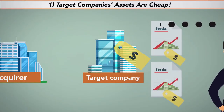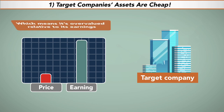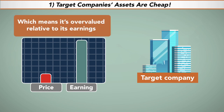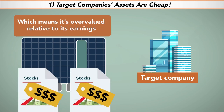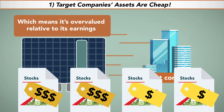Moreover, if the acquiring company has a high price-to-earnings ratio, which means it's overvalued relative to its earnings, it may be able to leverage its high-value shares by using them to purchase the stock of other companies with strong earnings relatively cheaply.